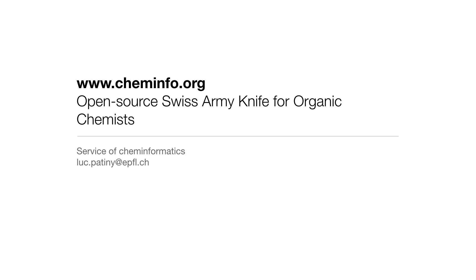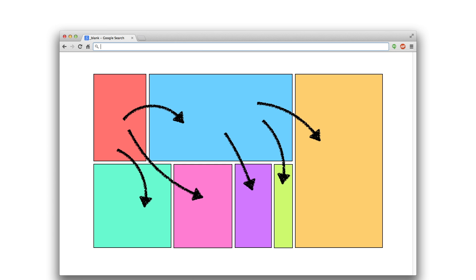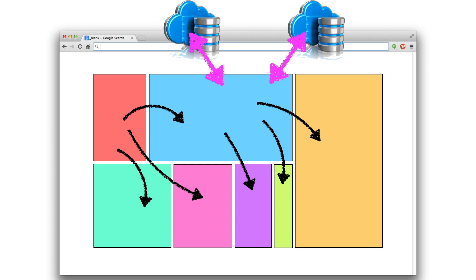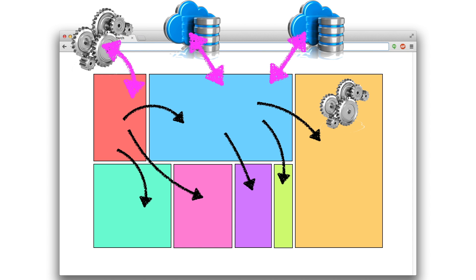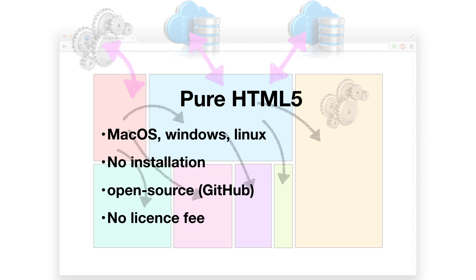In this video, we present some features of caminfo.org. The basic idea is that we take an empty web page and draw some modules that may interact between them, have access to databases, have access to external tools, and we also move a lot of logic into the web page. We write everything in HTML5 so that it's compatible with the browser, no installation, it's open source, and we use it for both research and teaching.